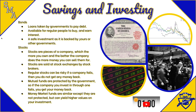Bonds are loans taken out by the federal government to pay off debt. The ones historically more commonly bought by private citizens are war bonds — if the country is at war and needs to pay for it, they'll sell war bonds. People can buy them for a few hundred or thousand dollars, and when the war is over, the government pays them back with interest. Bonds are typically a safe investment because governments are fairly stable institutions politically and financially.